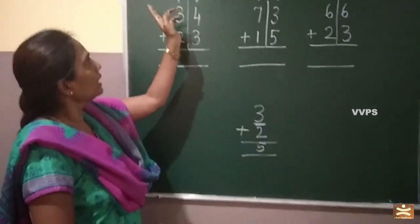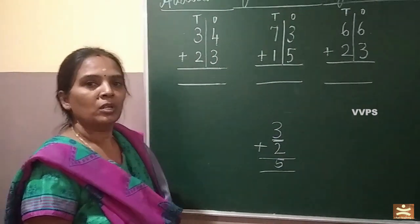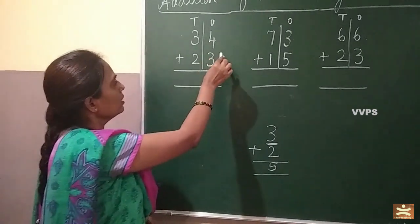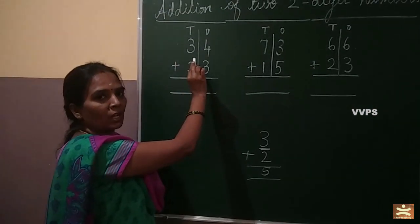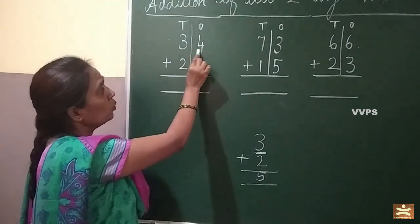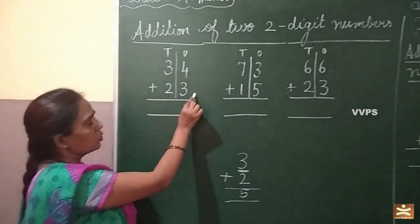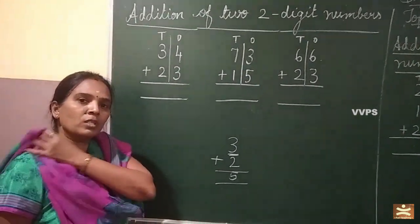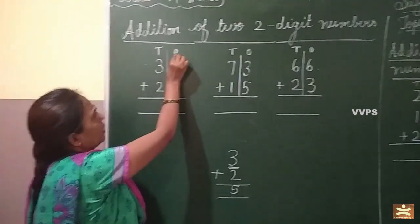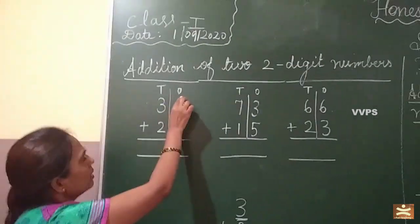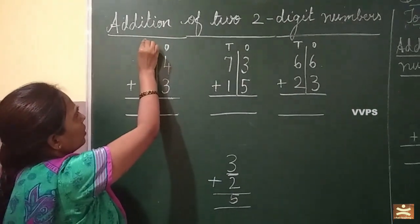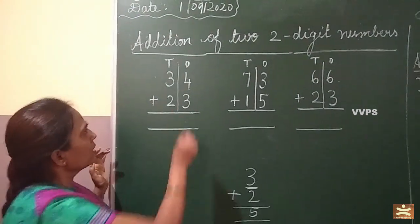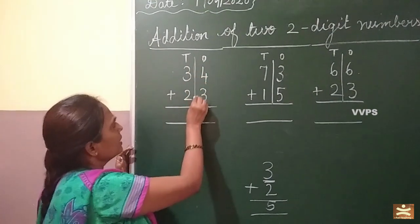One digit number. Now you will be learning addition of two digit numbers. It is very easy. Two digit number — you have one, two digits. So first thing what you have to do: you have to write the three squares. This is in one space and this is in ten space. First thing you have to determine whether it is in one space or ten space. See children, you have to draw a line in the middle like this.